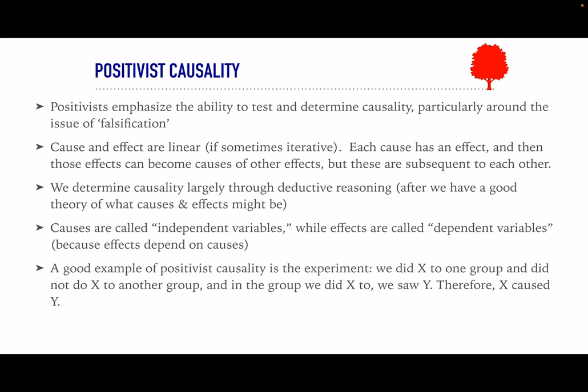You do x to one group, you don't do x to the other group. If you see an effect in group x and you don't see that effect in group y, then x is the cause. This is the standard they all wish they could aim for. Unfortunately, there are some things you cannot conduct experiments on — positivists are sad about this.